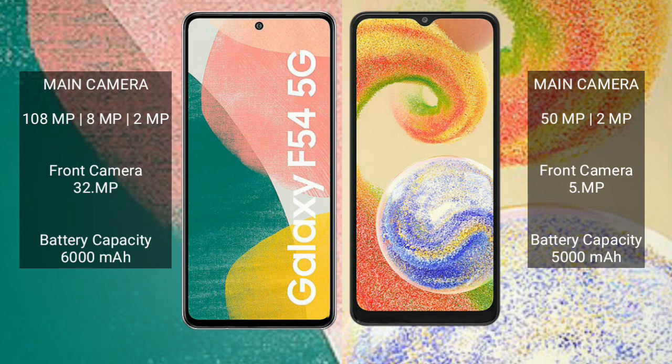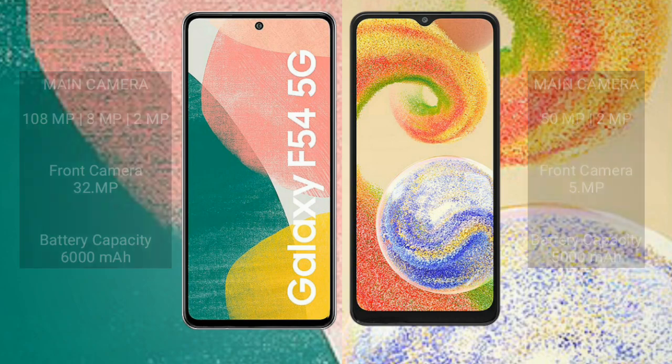Samsung Galaxy A4 features a rear dual camera setup: 50MP plus 2MP, and a front camera of 5MP. Samsung Galaxy A54 has a 6000mAh battery with 20W fast charging support, while Samsung Galaxy A4 has a 5000mAh battery with 15W fast charging support.